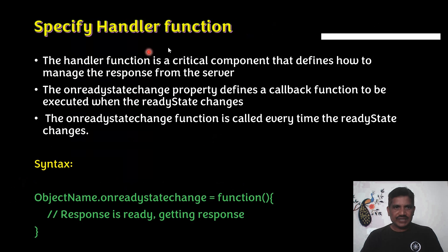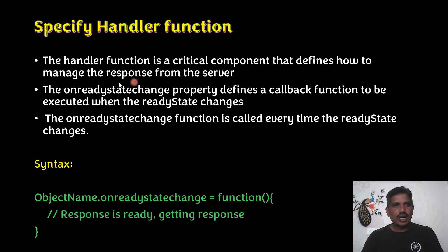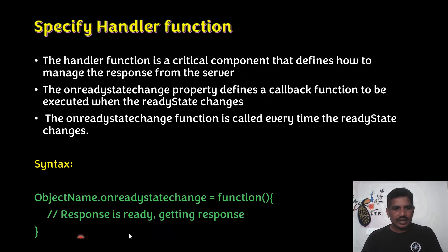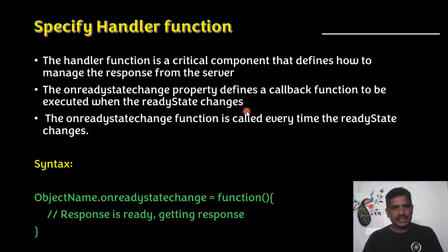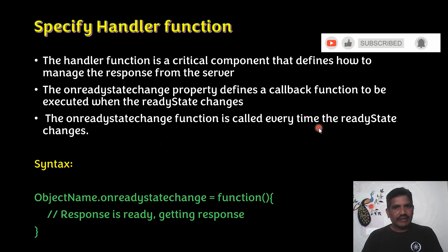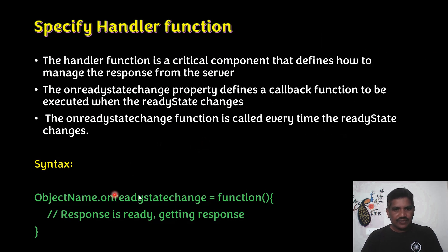The second step is to specify a handler function. The handler function is a critical component that defines how to manage the response from the server. Once we receive the response, we manage it using the handler function. The syntax is: objectName.onreadystatechange = function() { // code to get the response from the server }. The onreadystatechange property defines a callback function to be executed every time the readyState changes.